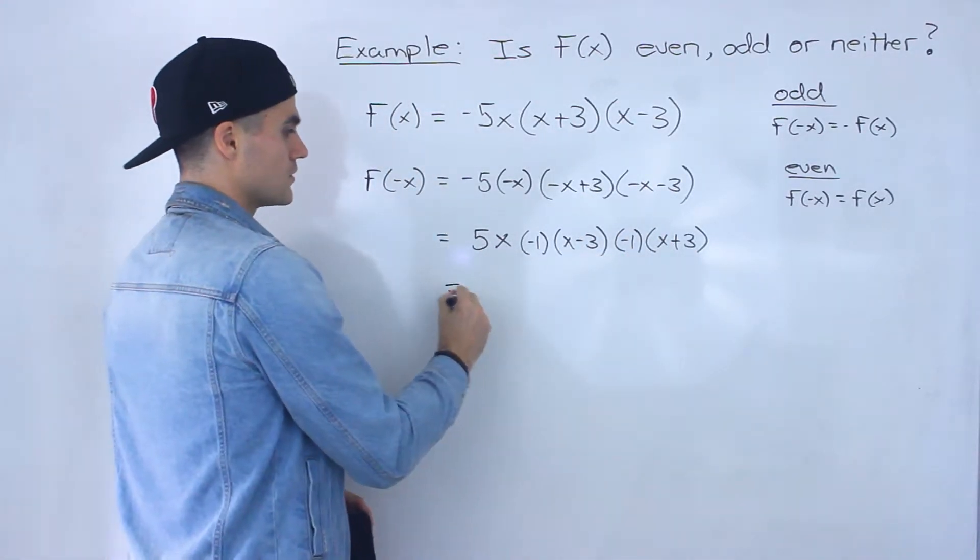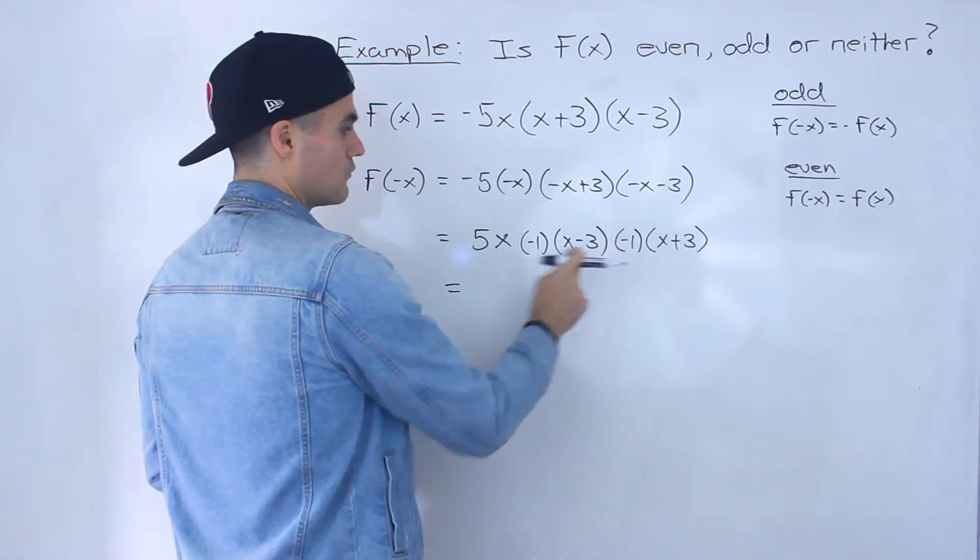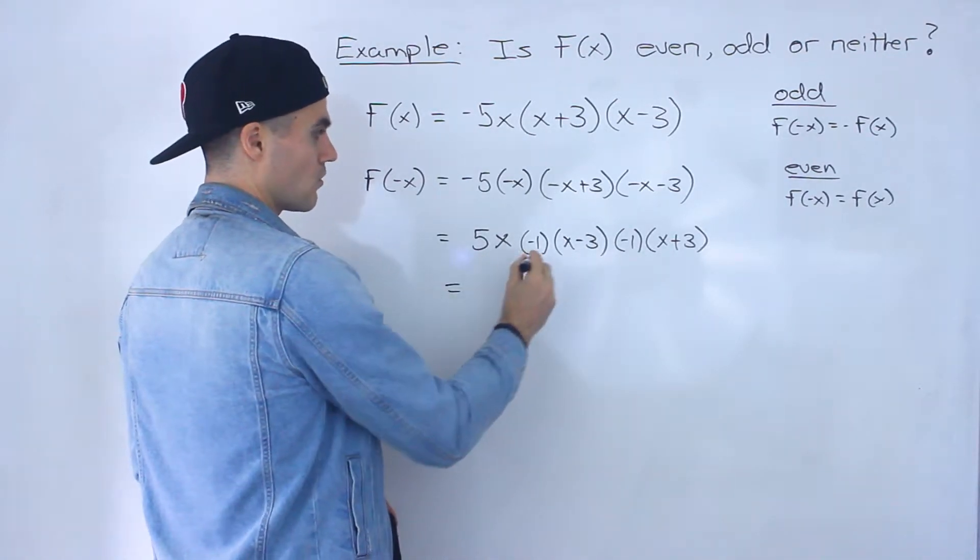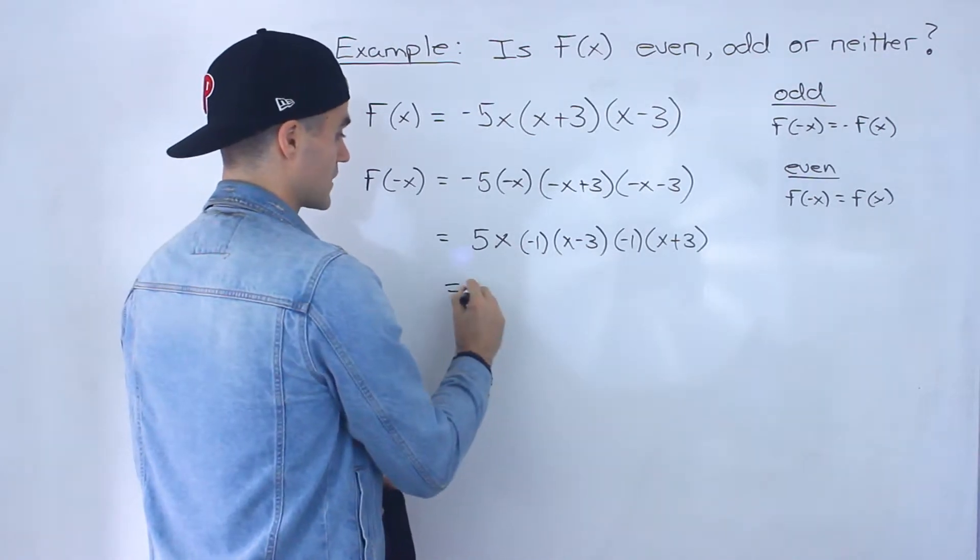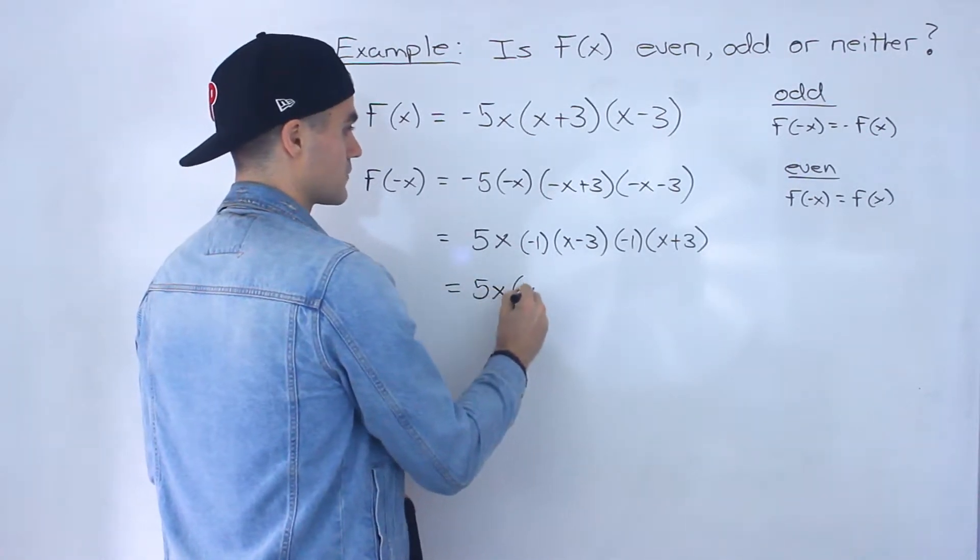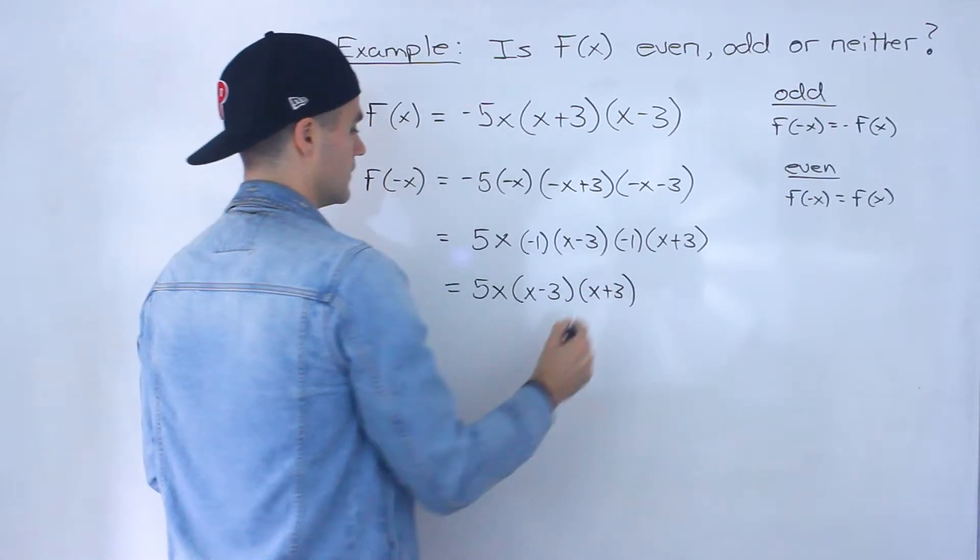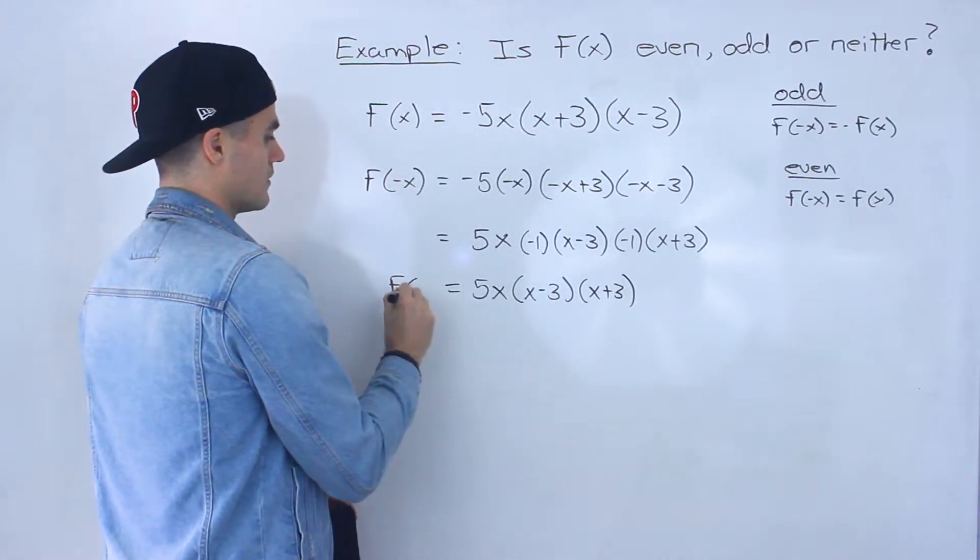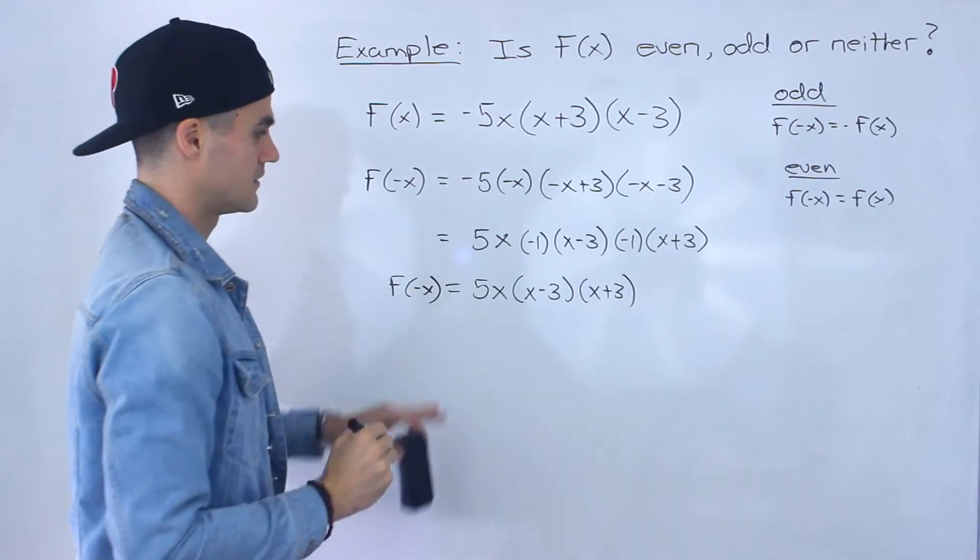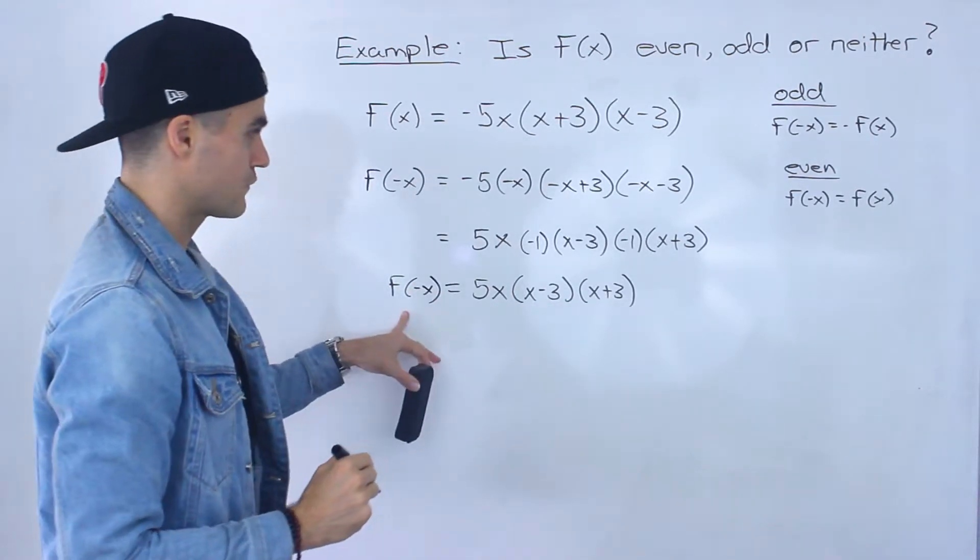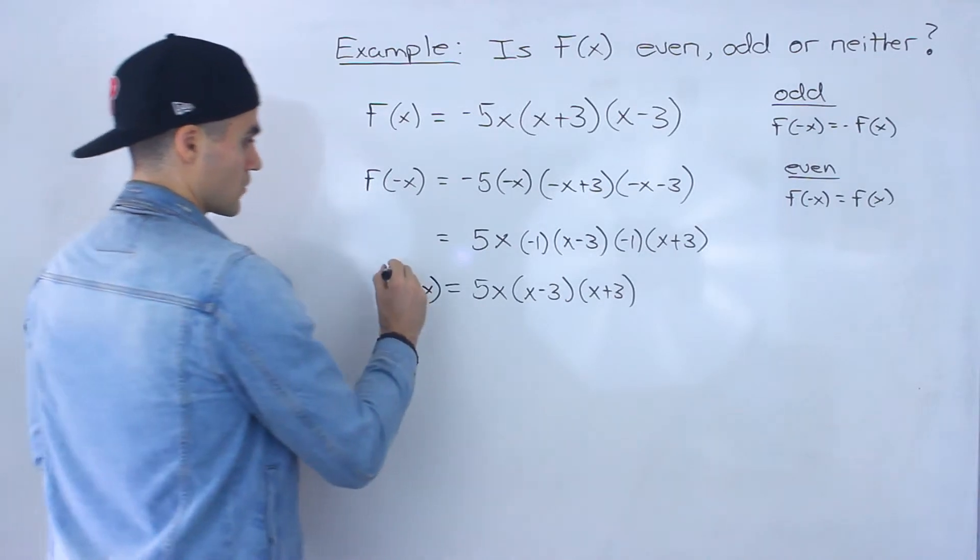Now what you can do is multiply this negative 1 times negative 1 times 5x. So negative 1 times negative 1 is just positive 1 times 5x, giving us positive 5x, and then we got this x minus 3 times x plus 3. That there is the simplified expression for f of negative x.